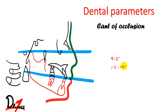This measurement gives a measure of the slope of the occlusal plane — it is actually telling you how steep or shallow the slope of the occlusal plane is.